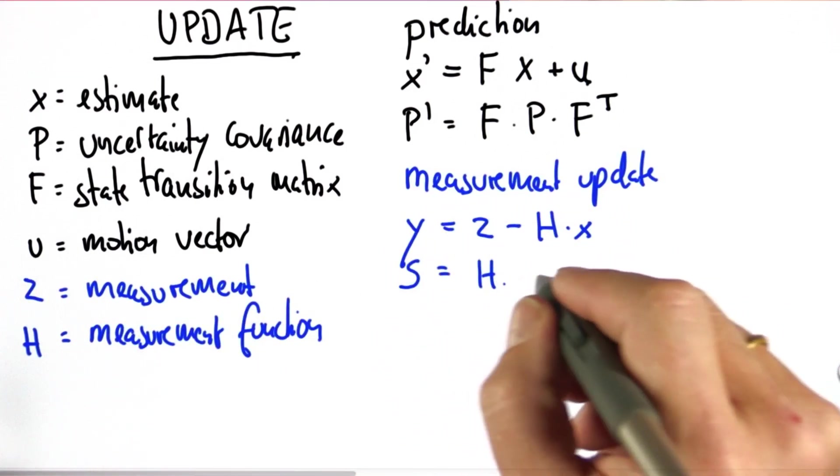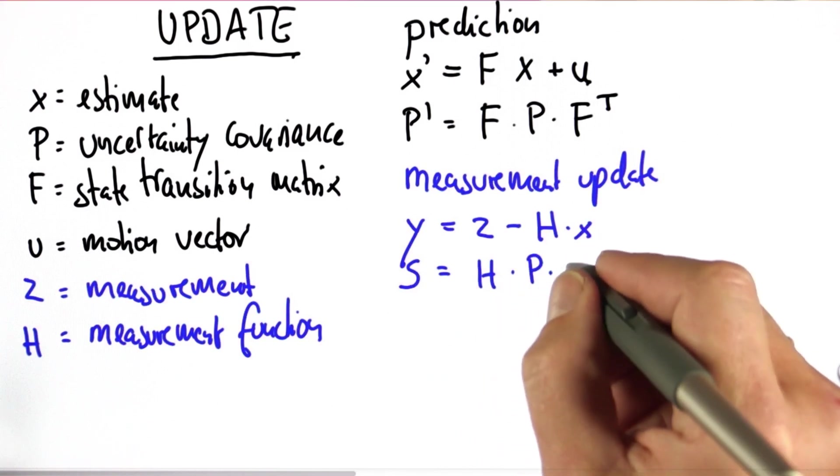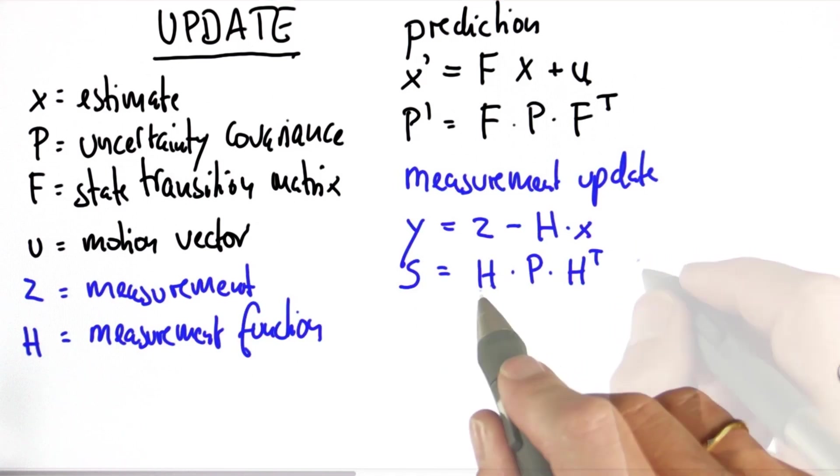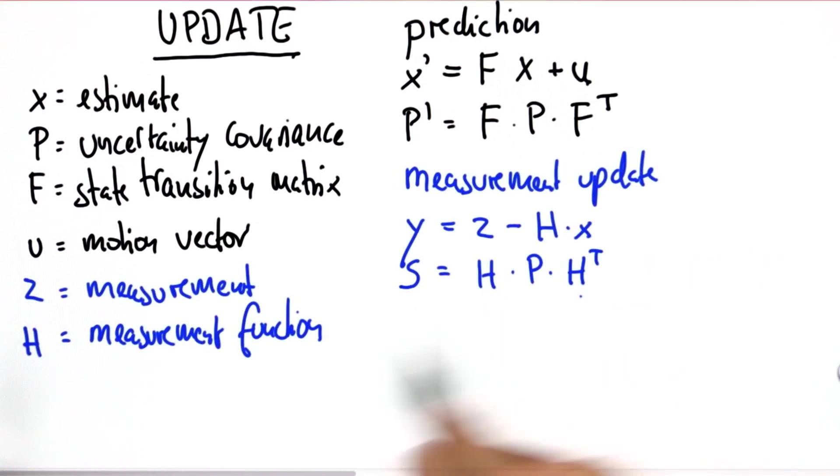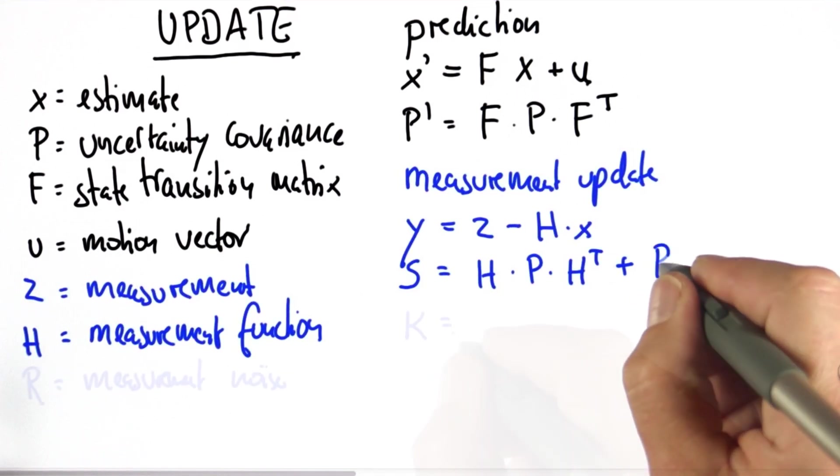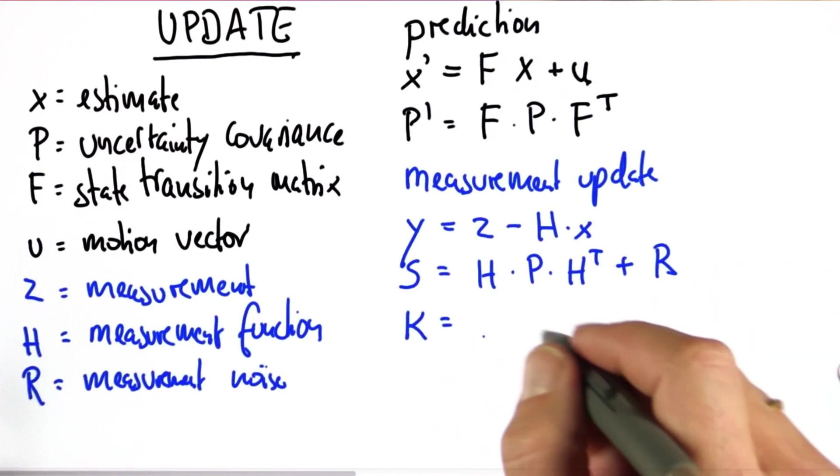The error is mapped into a matrix S, which is obtained by projecting the system uncertainty into the measurement space, using the measurement function projection, plus the matrix R that characterizes the measurement noise. This is then mapped into a variable called K, which is often called the Kalman gain, where we invert the matrix S.